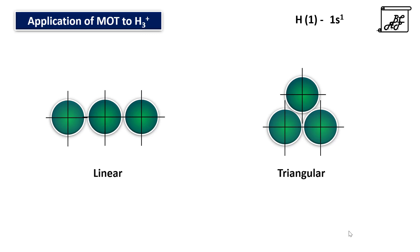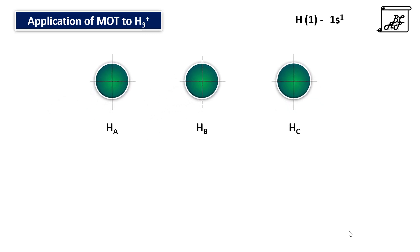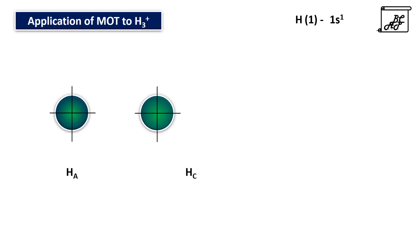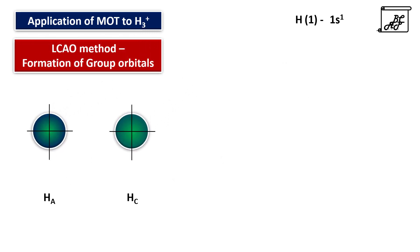To understand molecular orbital theory among three atoms, we have to consider one atom as the central atom and the other two as peripheral atoms. According to molecular orbital theory, we first apply the linear combination of atomic orbital method, that is the formation of group orbitals. According to this method, the peripheral atoms first combine with each other to form group orbitals.